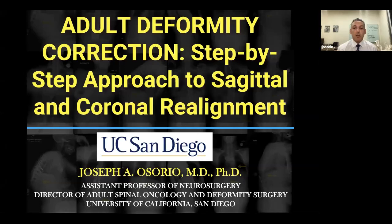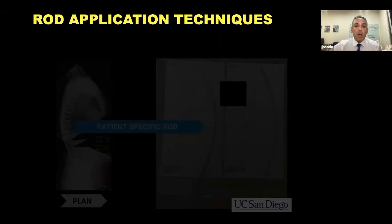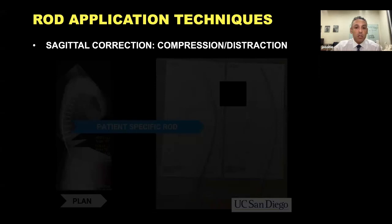Thank you. Really appreciate the invitation, Hanny, for inviting me, as well as the San Diego Spine Foundation for having me. I'm going to go through a step-by-step approach to sagittal and coronal realignment for adult deformity correction. I share this lecture because it was one we had while I was a fellow with Larry Lenke. When Larry gave a similar lecture, I felt it was pretty impactful and I started to take more out of his corrections during cases. Here are my disclosures. When I'm talking about correction, I'm really talking about rod application techniques, and I'm going to show videos and go through case examples.